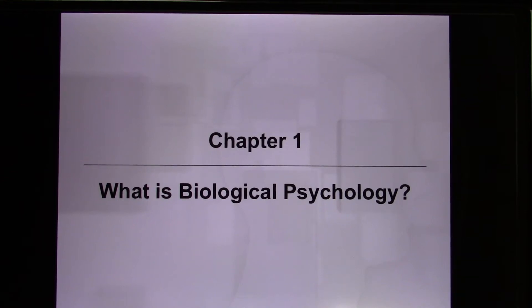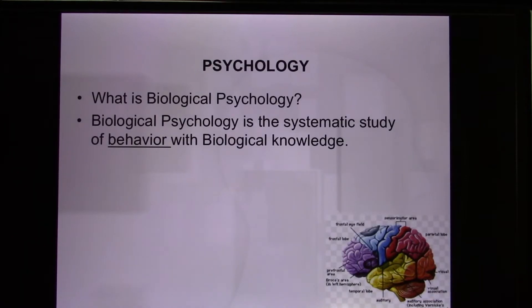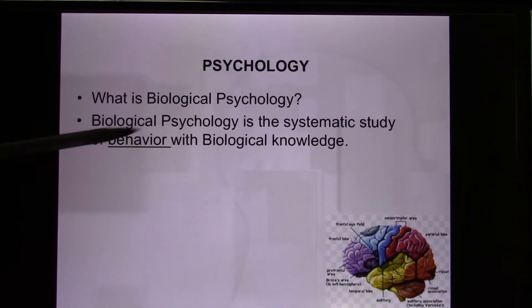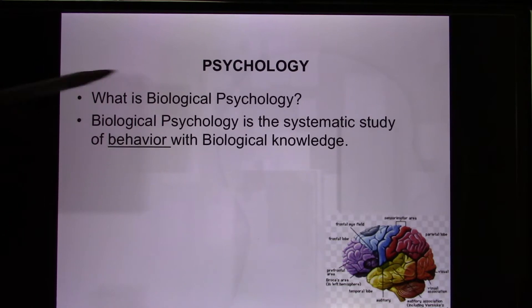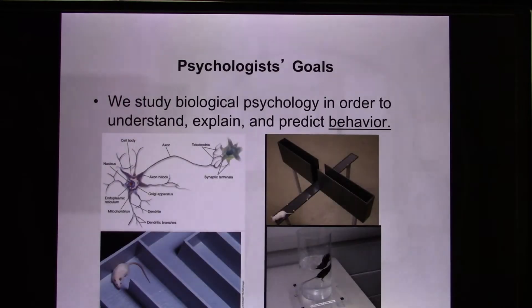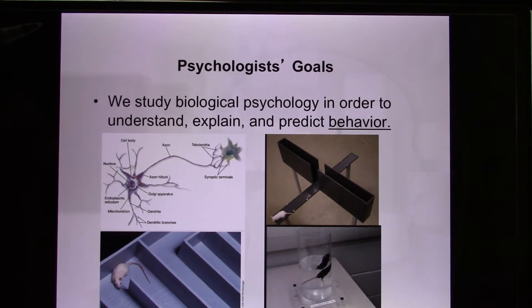We're in Chapter 1: What is Biological Psychology? In psychology, we study behavior. In biopsychology specifically, we use human or animal — a lot of animals — and we systematically study behavior with biological knowledge. Eventually, we still want to explain the behavior. The goal is that we use a lot of animals in biological psychology.